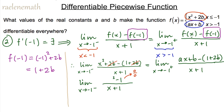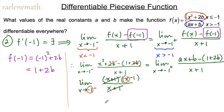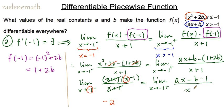Continuing on the right-hand side: the limit as x approaches negative one from the right of (ax plus b minus one minus 2b) over (x plus one), which simplifies to (ax minus b minus one) over (x plus one). The denominator will be zero by direct substitution, so we need the numerator to also be zero to resolve the indeterminacy.